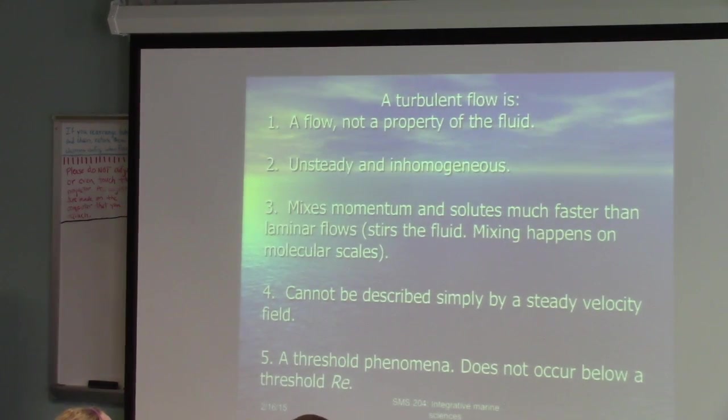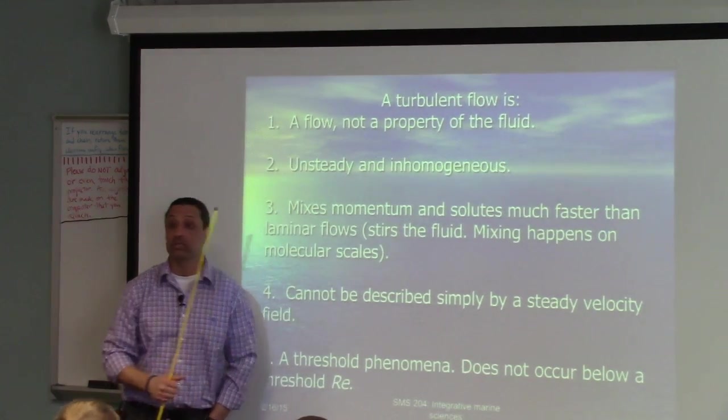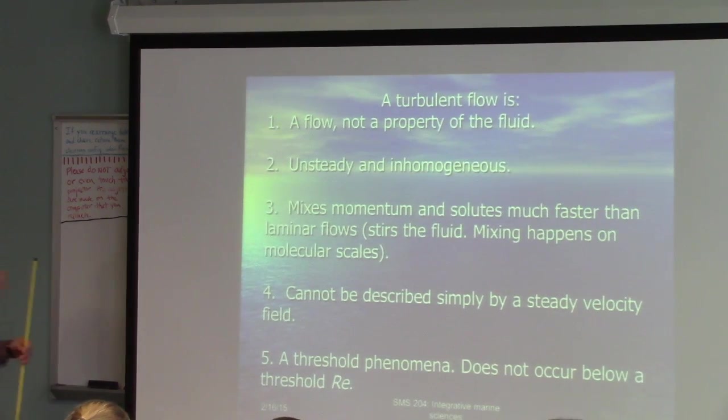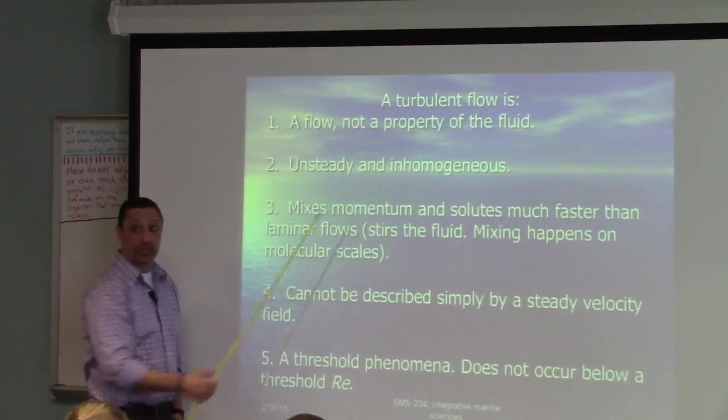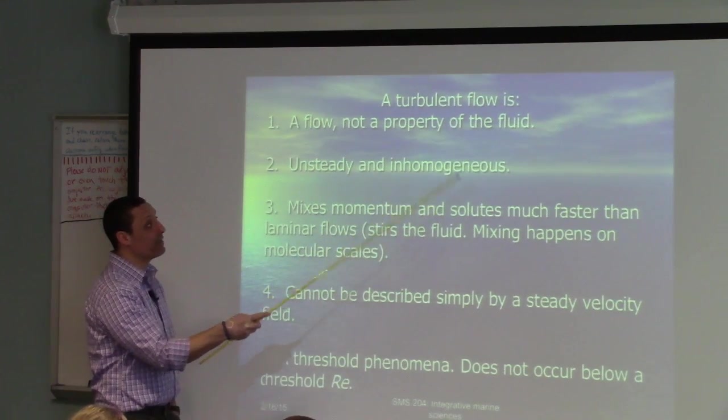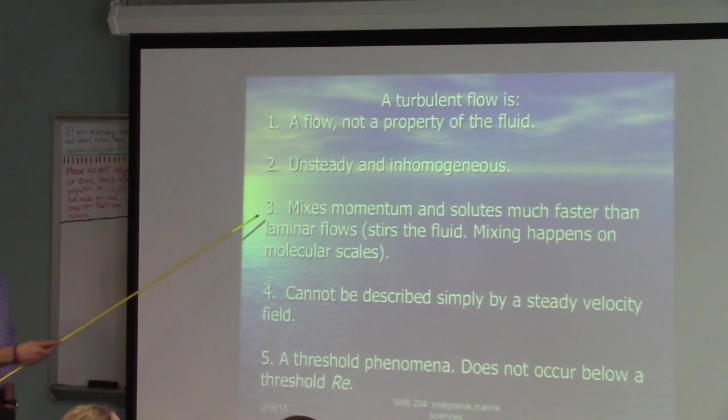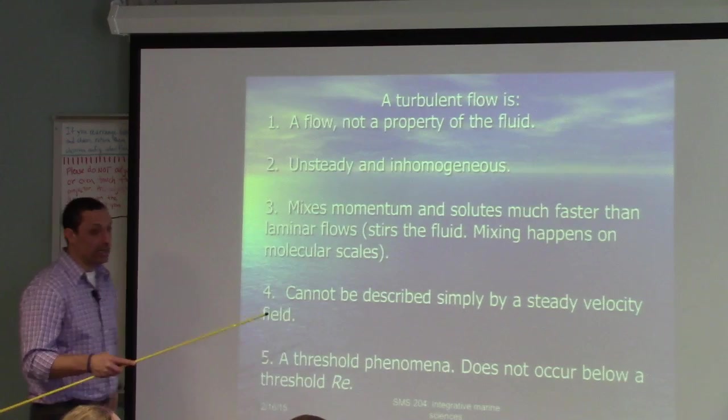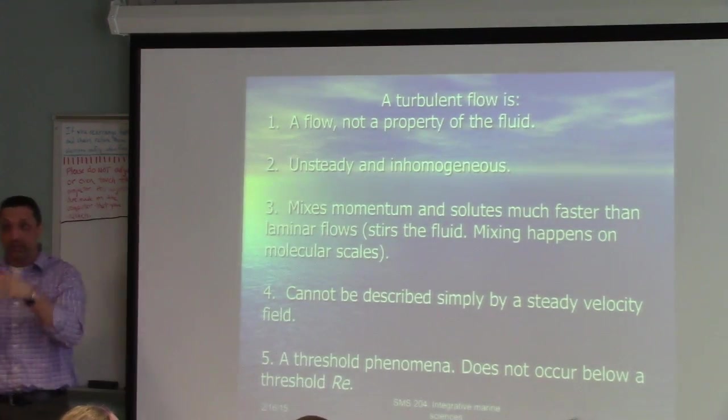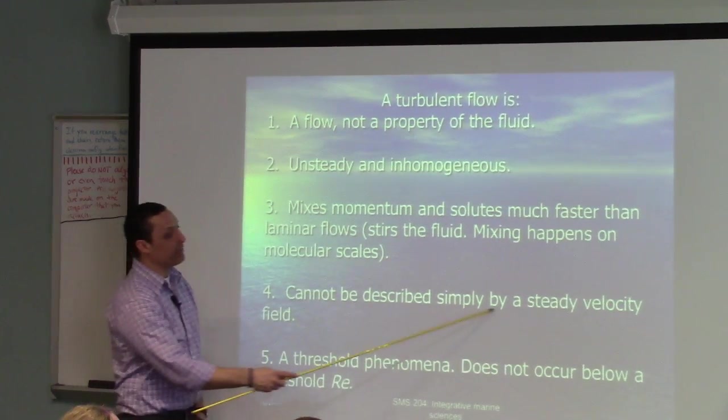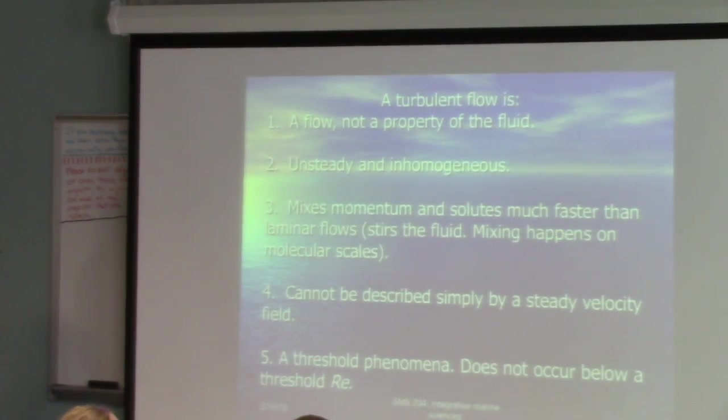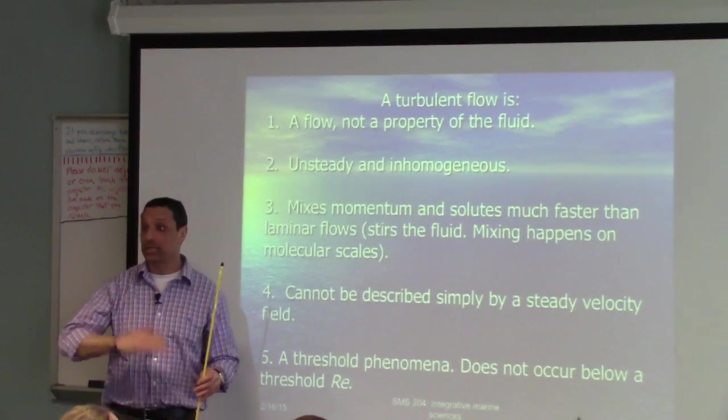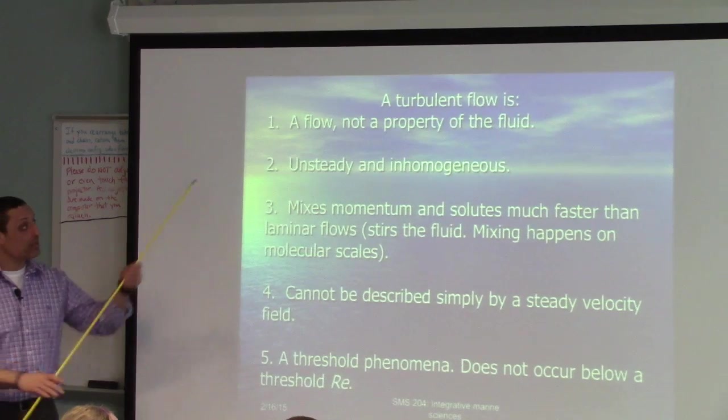What is a turbulent flow? This is very important. Turbulent flow is a property of a flow, not the fluid. Water is not turbulent. Certain flows with water are turbulence. Turbulence is unsteady and inhomogeneous. Inhomogeneous means the properties of the flow vary in space. Unsteady means it varies in time. Turbulence tends to accelerate a lot the mixture of momentum and solute, much faster than it would be for a laminar flow. It cannot simply be described by steady velocities. You really want to know something about how variable the fluid is, not just the mean flow. And it's a threshold phenomenon. It does not occur below a certain Reynolds number.